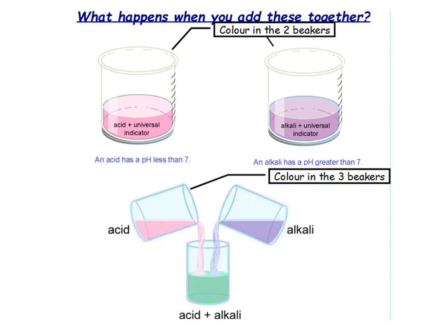So in your booklets you have this page, but without the colour. What I want you to do is colour in an acid with a universal indicator — we're going to sort of pink-red, strong end, so red. An alkali at pH greater than 7, so we're going for purple, nice and strong. And then you're going to put the two together and draw in green. So colour this in if you can, or write the colours to make it obvious.